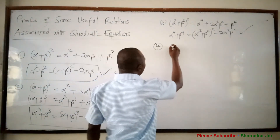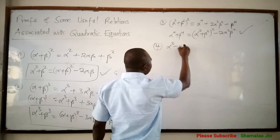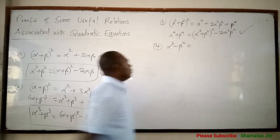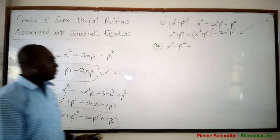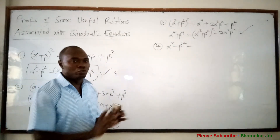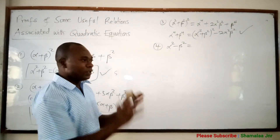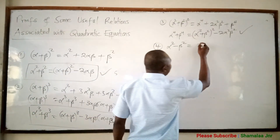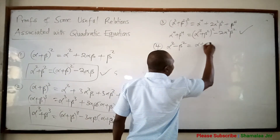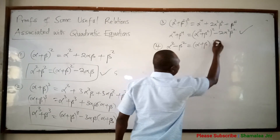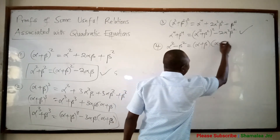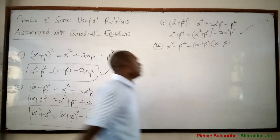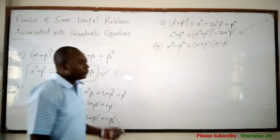Number four: you can also have alpha squared minus beta squared. This one is the difference of two squares. So this one factors as alpha plus beta times alpha minus beta.